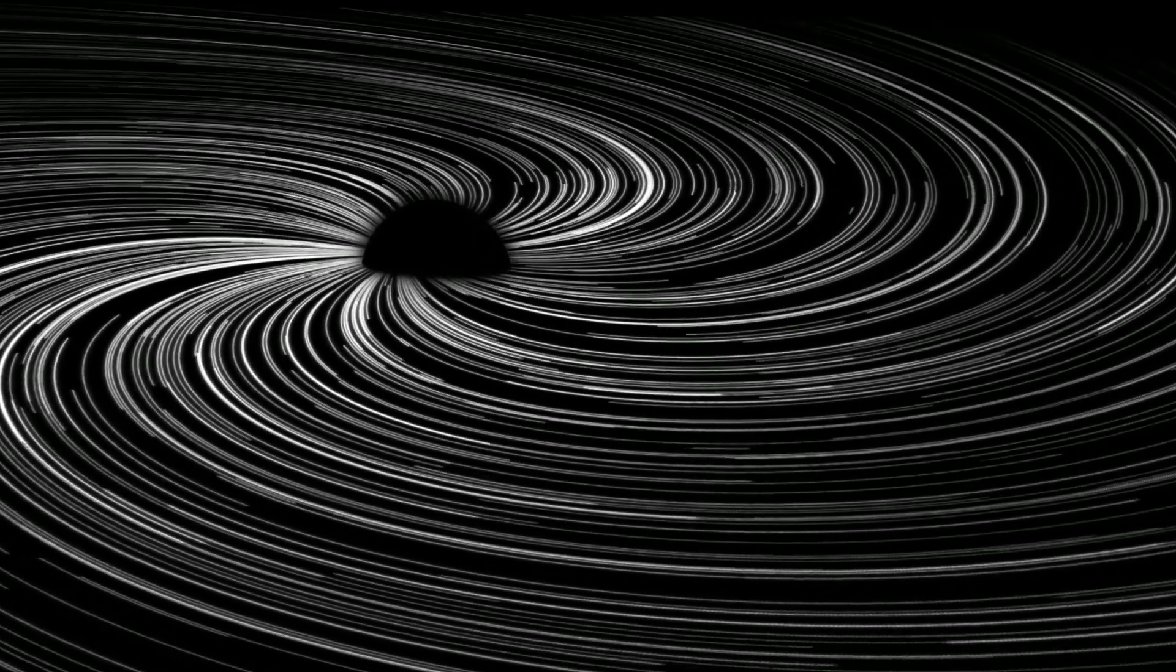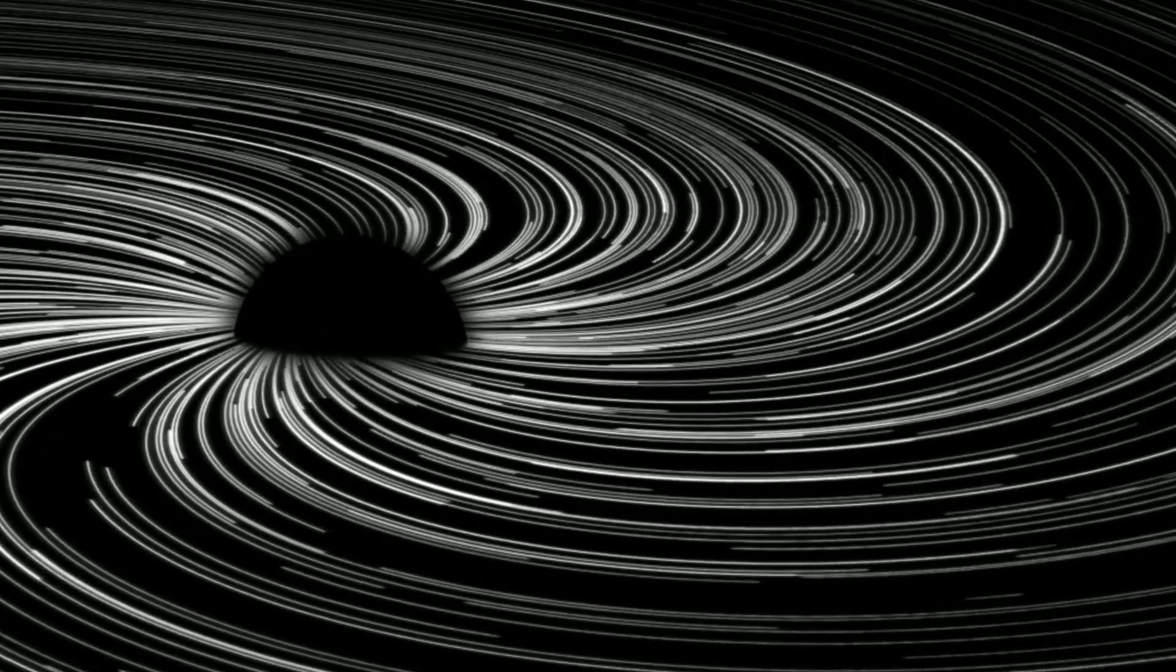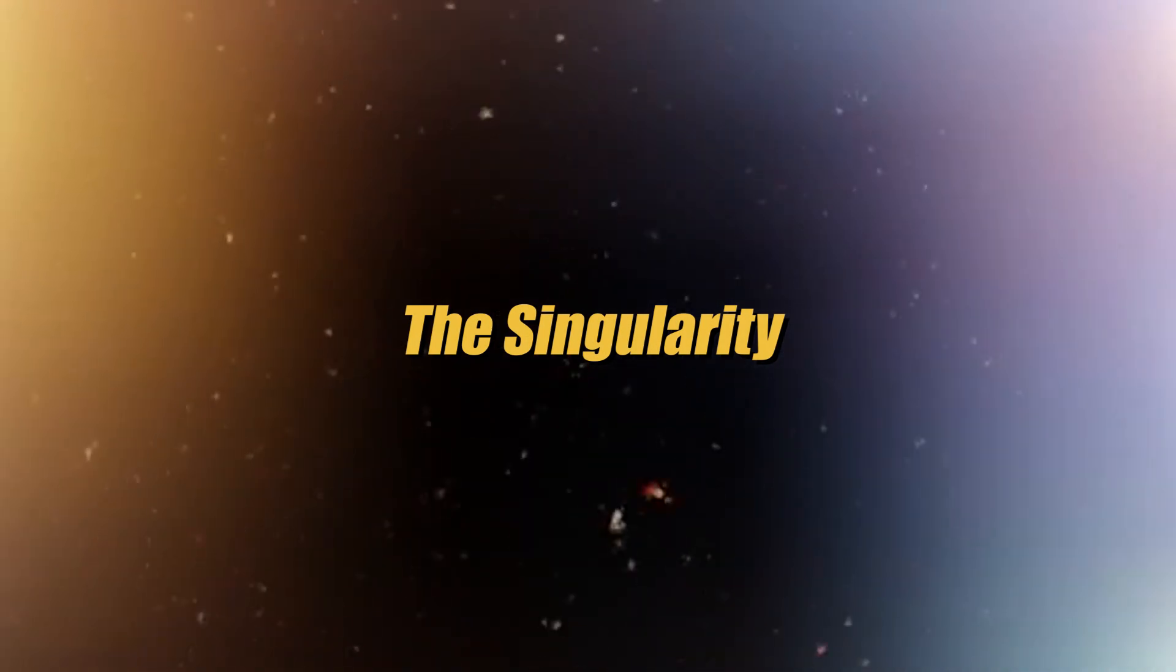The second layer is the photon sphere, which is the region where light orbits around the black hole. Any light entering this region will be trapped and will not be able to escape the gravitational pull of the black hole. Finally, the third layer is the singularity. This is where everything that enters the black hole is astronomically compressed into a point of infinite density. The singularity is a point in space-time where the laws of physics as we know them break down.